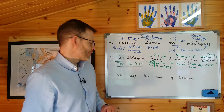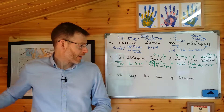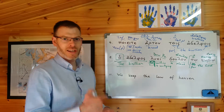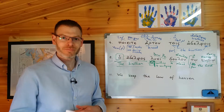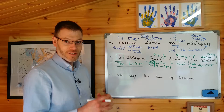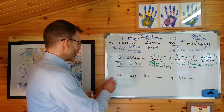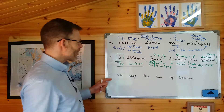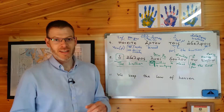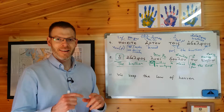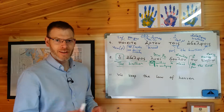Now it's slightly more difficult — always slightly more difficult to go from English into Greek. It's always more difficult to go into the language you're less familiar with, because speaking or writing in a language requires greater familiarity to construct something from new than it does just to read something that's already there. But here goes, number 11. We'll have a crack at it anyway: 'We keep the law of heaven.'